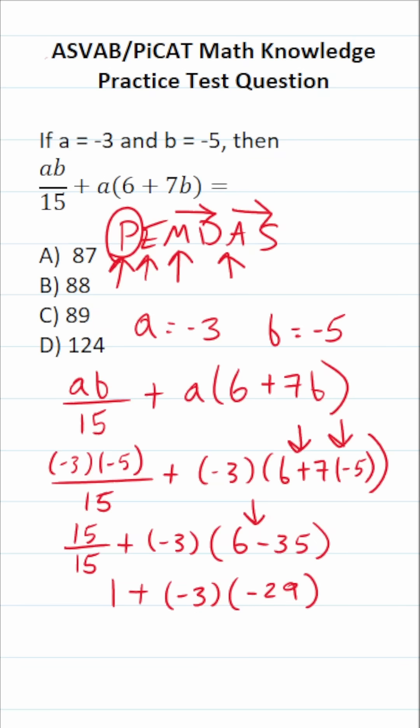All right, so what do we have left? We have addition here and multiplication here. Of course, we always do multiplication before addition. So let's go ahead and do that. What is a negative times a negative? It's going to be a positive. So this is going to be 1 plus. And what is negative 3 times negative 29? Well, that's the same thing as 29 times 3.